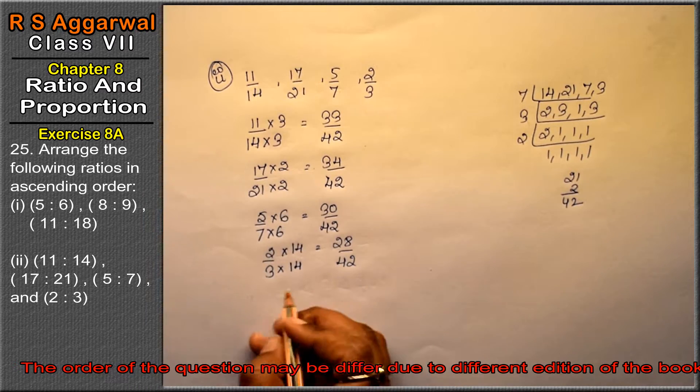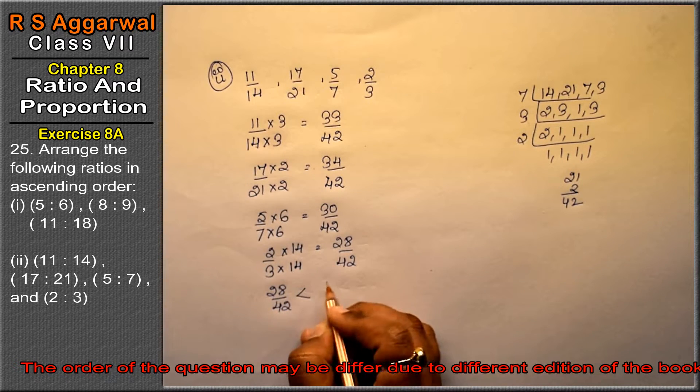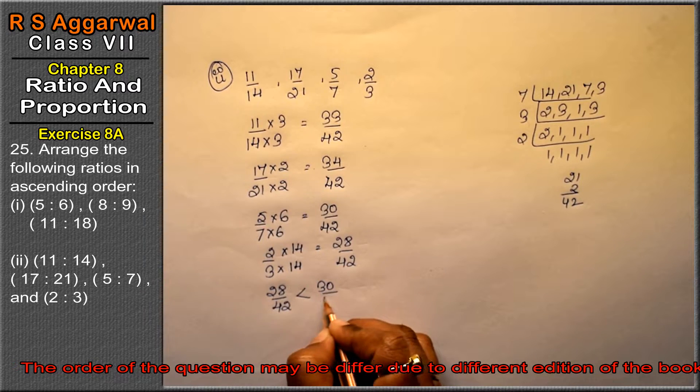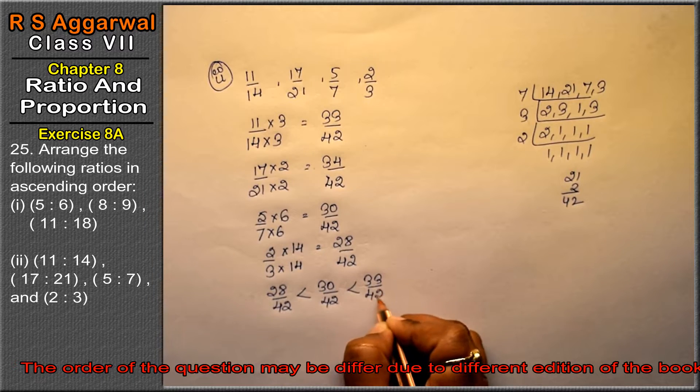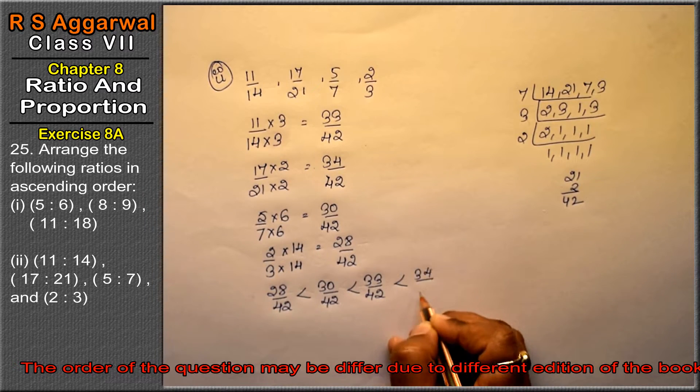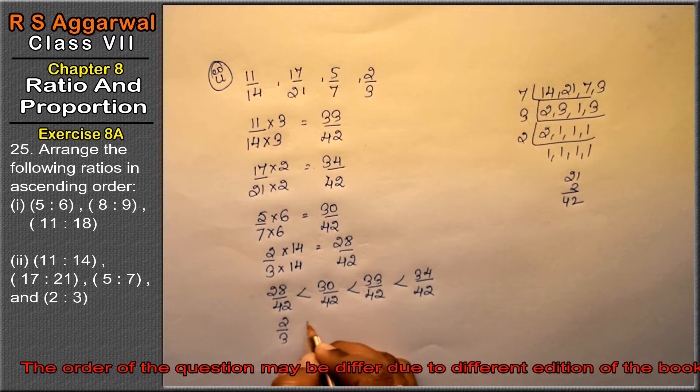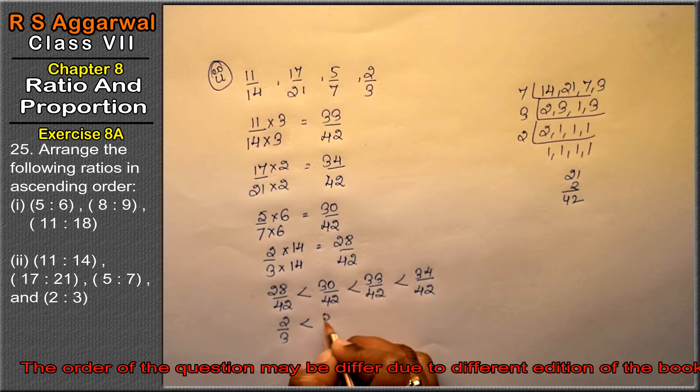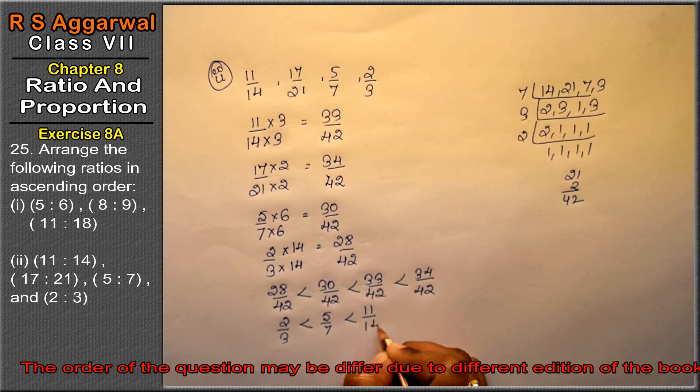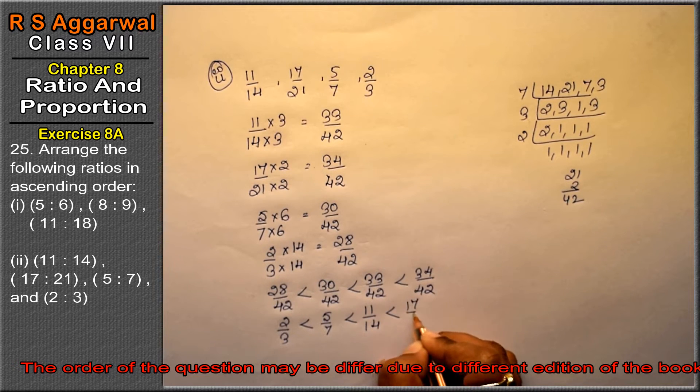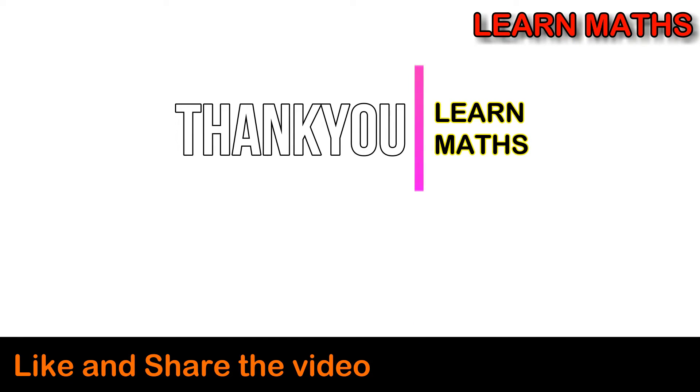So the smallest is 28 upon 42. Next is 30 upon 42, next one is 33 upon 42, and next one is 34 upon 42. Let's write the original values: 2 upon 3, 5 upon 7, next is 11 upon 14, and next is 17 upon 21.